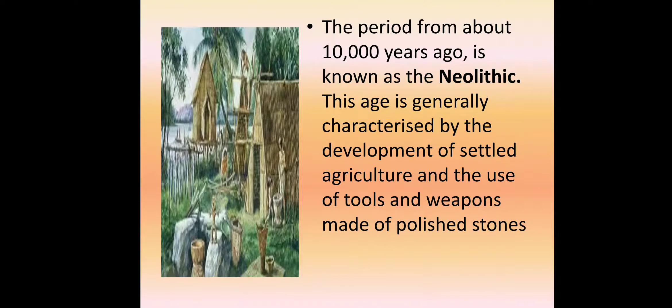The period from about 10,000 years ago is known as Neolithic. This age is generally characterized by the development of settled agriculture and the use of tools and weapons made of polished stone. They started cultivation and farming, chiseling megaliths and microliths into tools and agricultural equipment used for digging, sowing, and plowing.